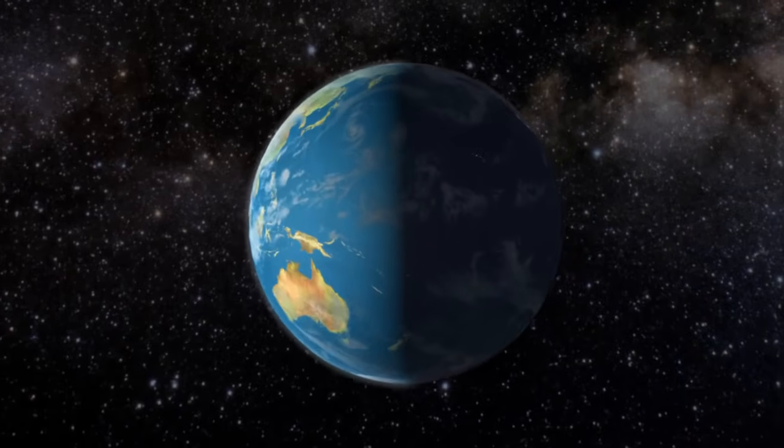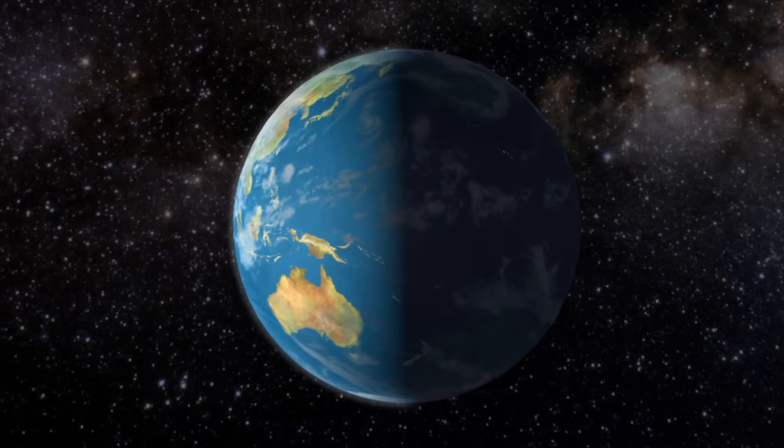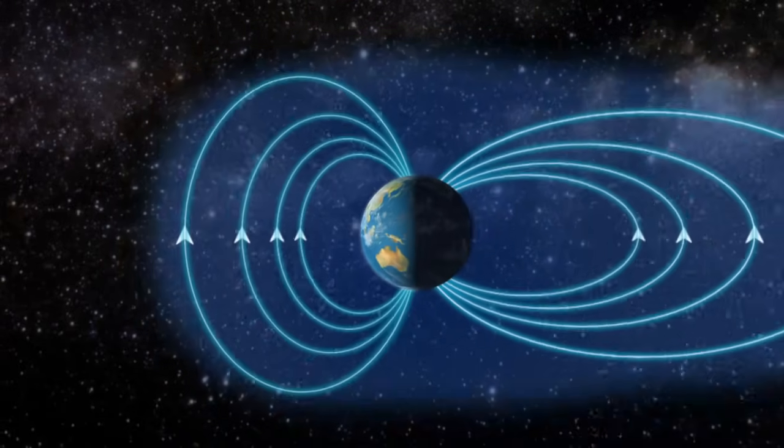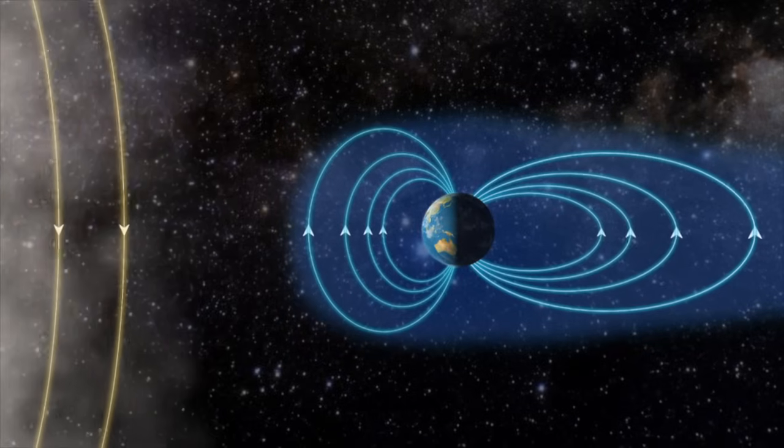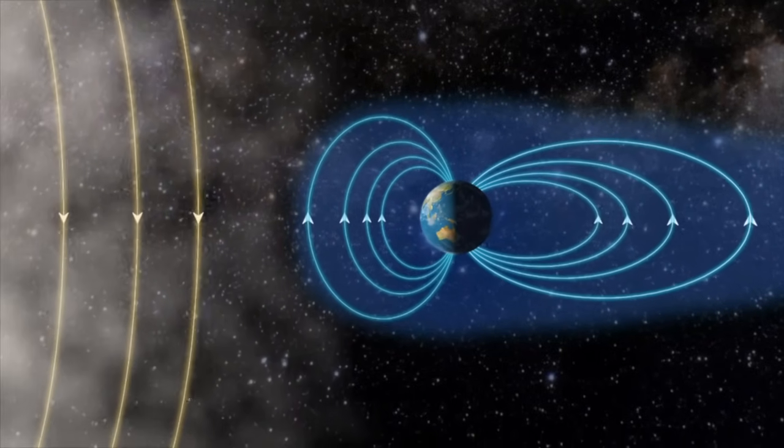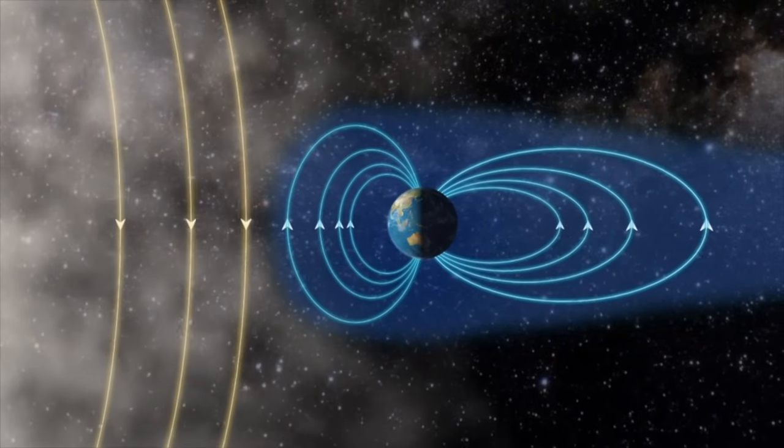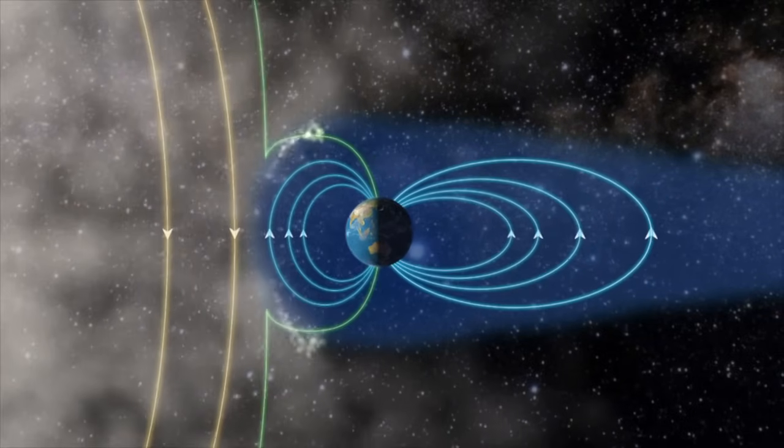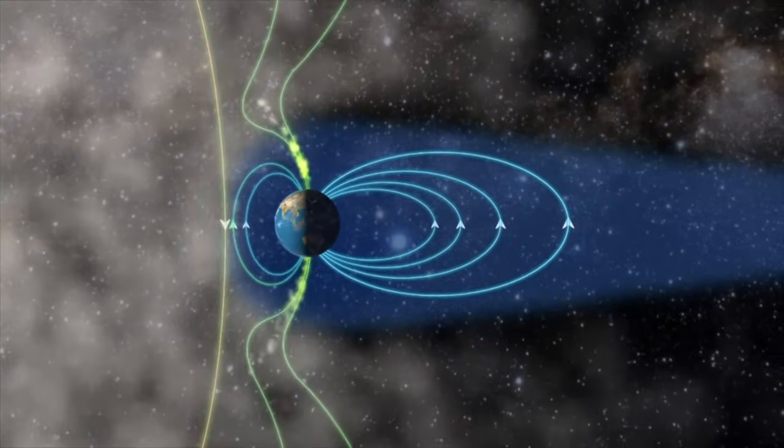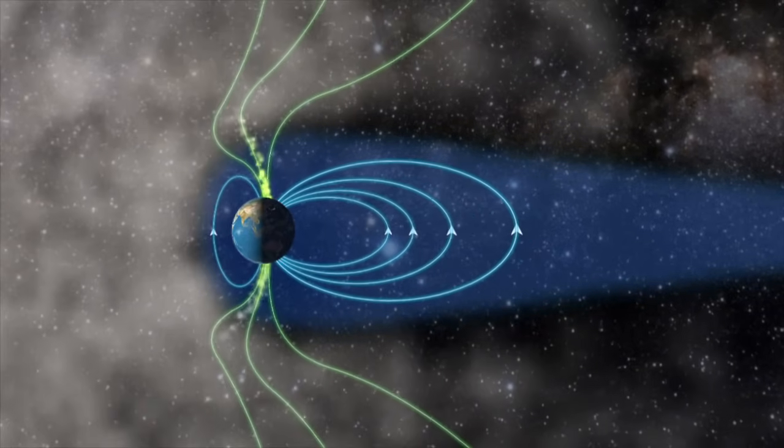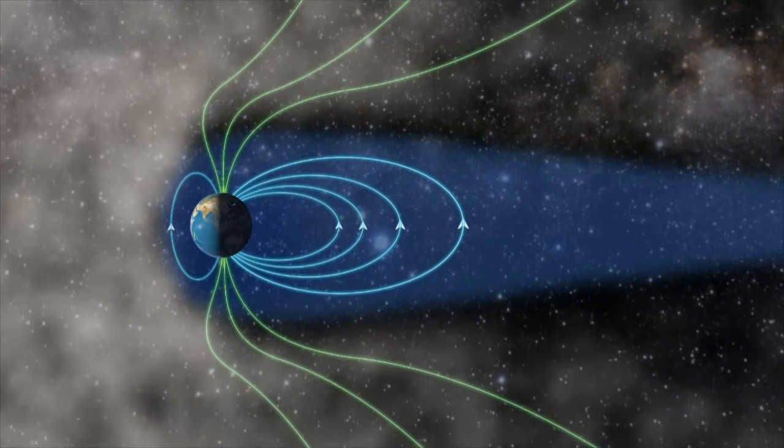When the solar storm reaches our planet, something strange happens. An invisible shield, the Earth's magnetic field, deflects the storm. The magnetic fields couple together and create a funnel where the gas streams down on the daylight side of the pole. This is the daylight aurora.